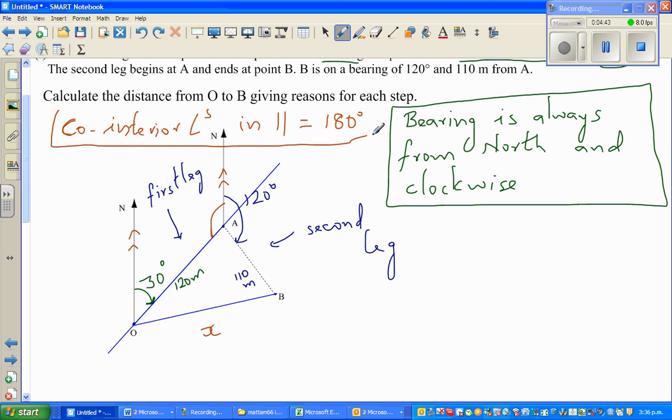You have rules of alternate angles, corresponding angles, and this third angle called co-interior angles. Alternate angles are equal, corresponding angles are equal, but for co-interior angles they add up to 180. So if this is 30 degrees, I can say this is 150 degrees.